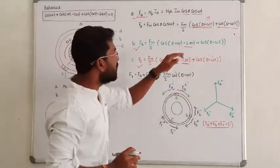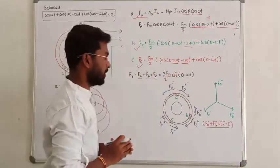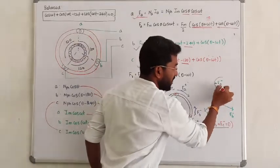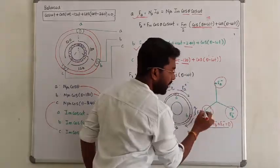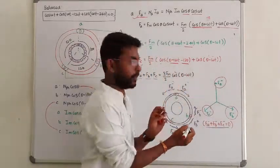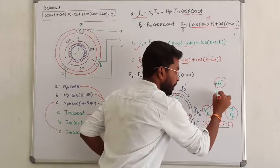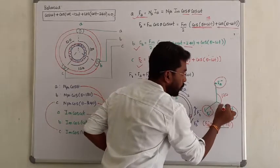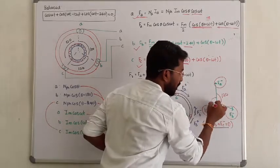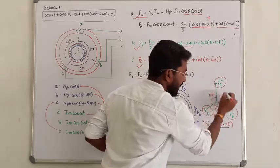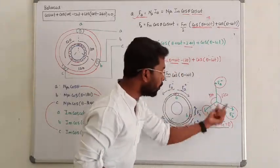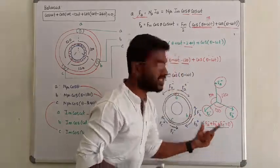Why? That is called a balanced system. In a balanced system, phase A, phase B, phase C are exact balanced sinusoids and they are displaced at an angle of 120 degrees from each other. So when three phases are exactly balanced at 120 degrees, the resultant is zero.